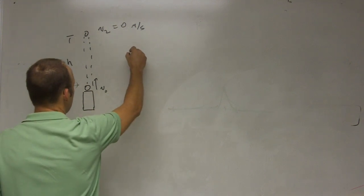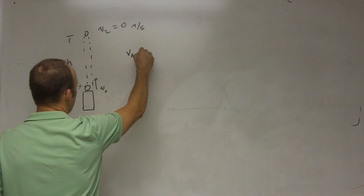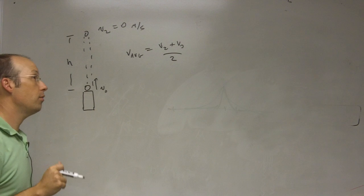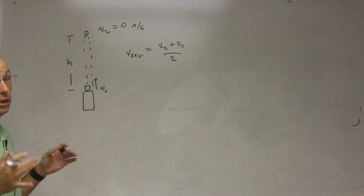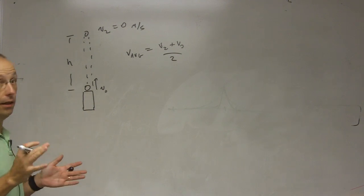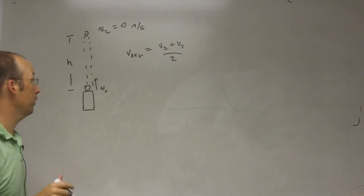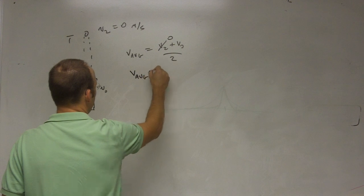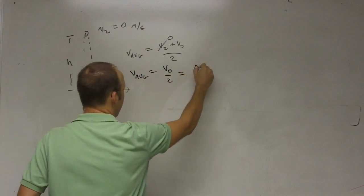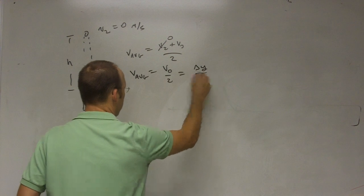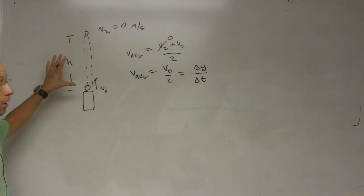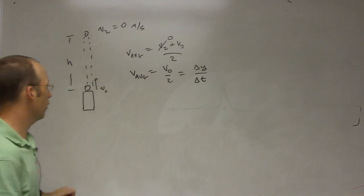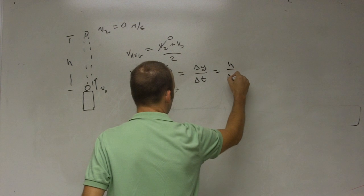So I can say the average velocity equals v2 plus v0 over 2. You can do that if the velocity changes at a constant rate. So the constant acceleration, which is what we have here. So that one's 0, so this is v average. This is going to be v0 over 2. And that's going to be delta y over delta t, right? Because that's what the average velocity is, change in position over change in time. And delta y is the final y is h, the initial 0. So this is h over delta t.